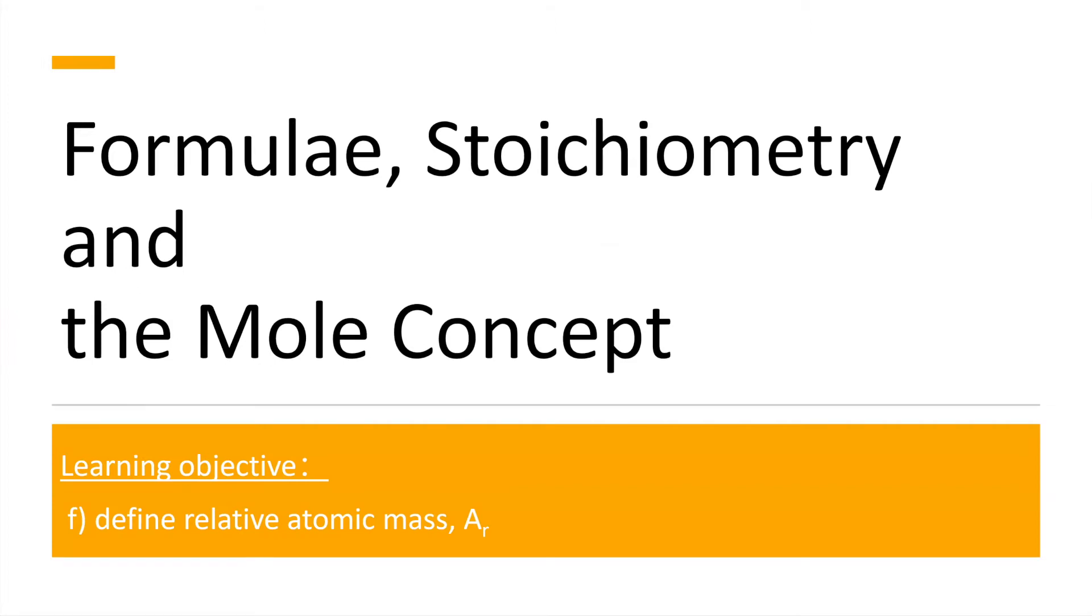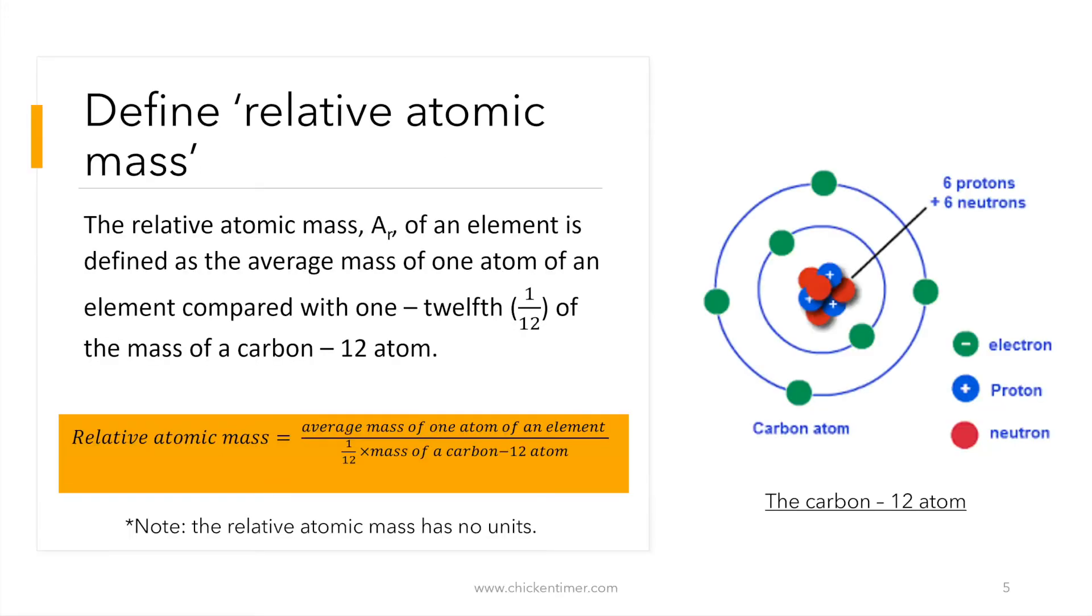So we have something called the relative atomic mass. This is something that later on you will find in your periodic table. Some revision again, we have the carbon-12 atoms in this slide. So you will see the carbon-12 atoms inside the nucleus. There will be six protons and six neutrons. Then you have electrons revolving around it. Then this is called the carbon-12 atoms.